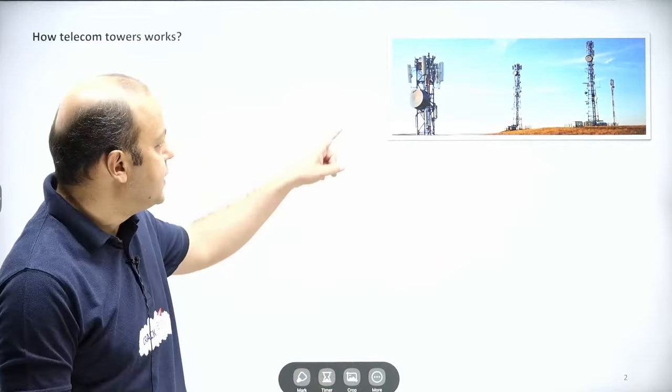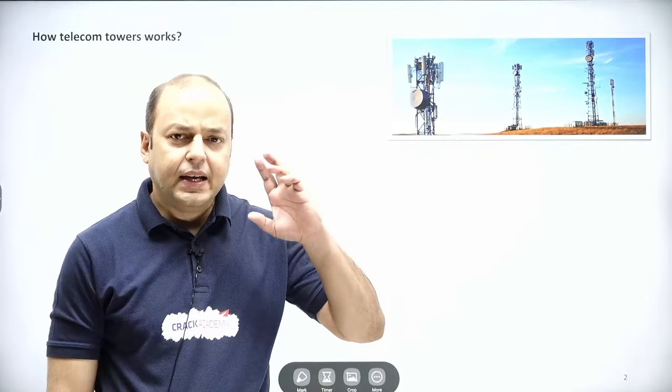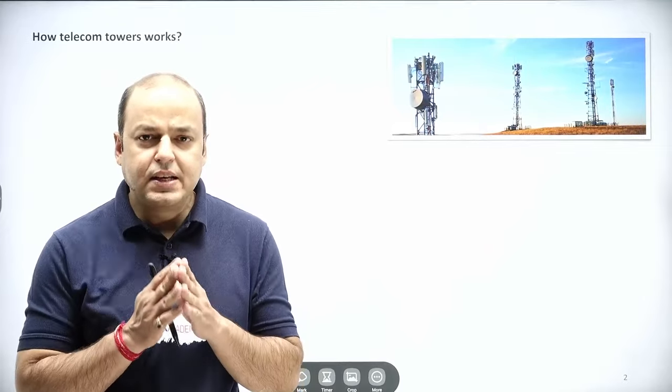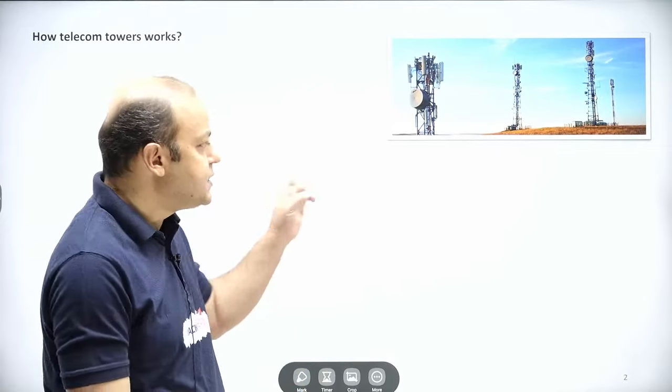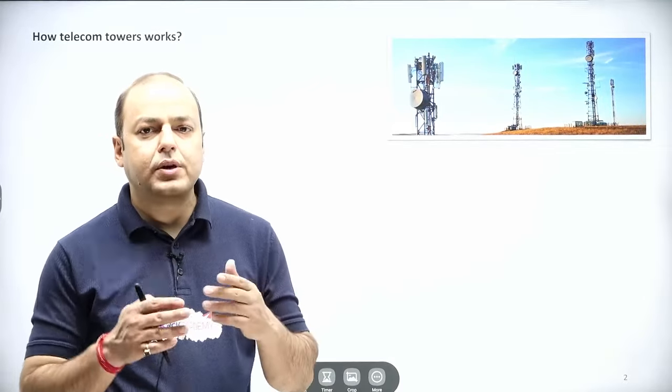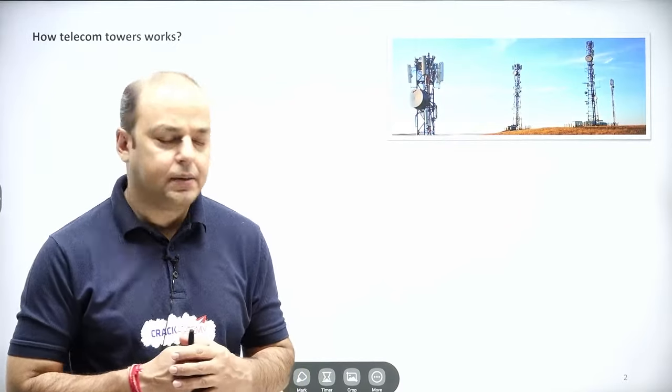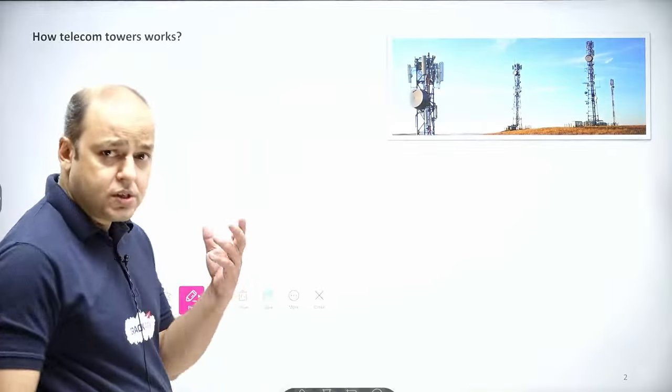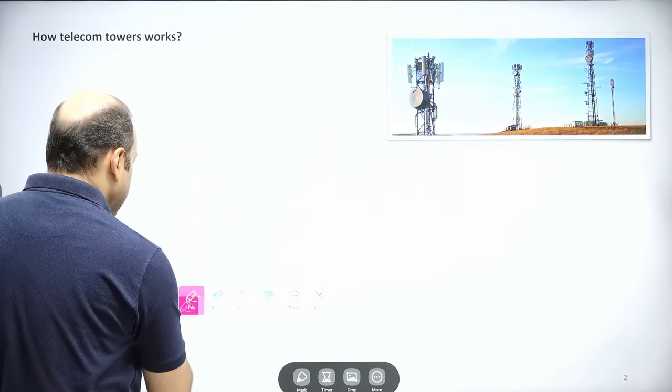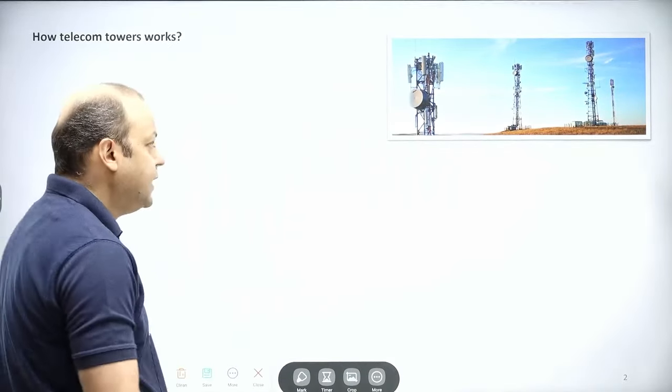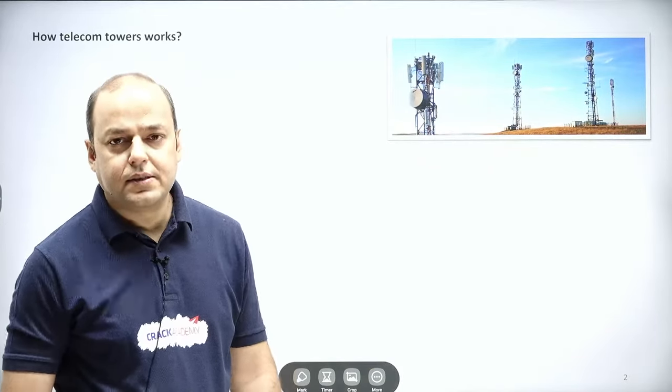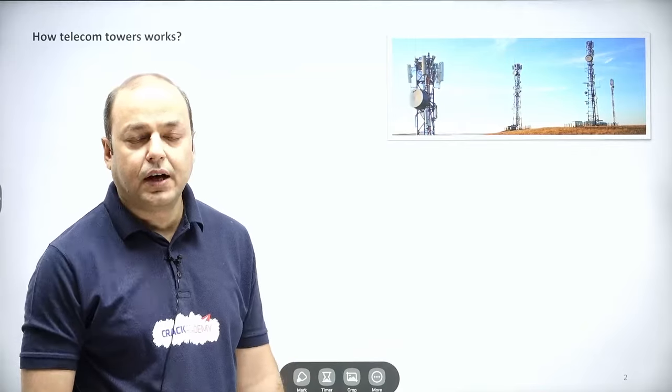As you can see, there are a few towers. So is there a particular formula, a particular reason they are placed like this? Suppose you've been given a budget, because this installation part is a cost-intensive process. Suppose I ask you to place these telecom towers in a given geographical area—how would you do that?